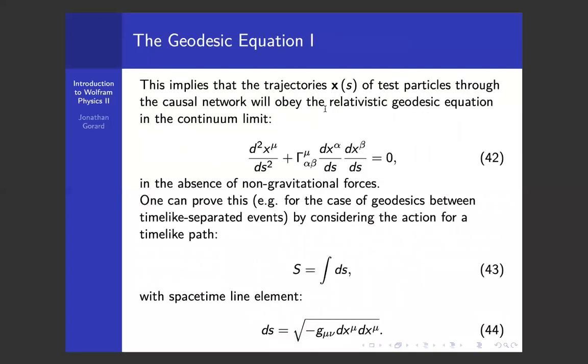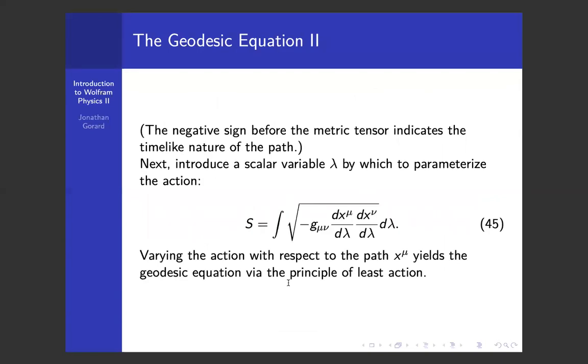As long as we have those three properties — finite-dimensional limit, weak ergodicity, and causal invariance — we can prove that any such causal network necessarily satisfies general relativity, or at least the vacuum case of the Einstein field equations. That's kind of cool, and it immediately gives us things we can test. In ordinary spacetime, if we have an Einstein metric satisfying the vacuum Einstein field equations, it will satisfy the geodesic equation — which you can prove just by using the principle of least action, considering a timelike path and introducing a scalar variable that parameterizes its action.